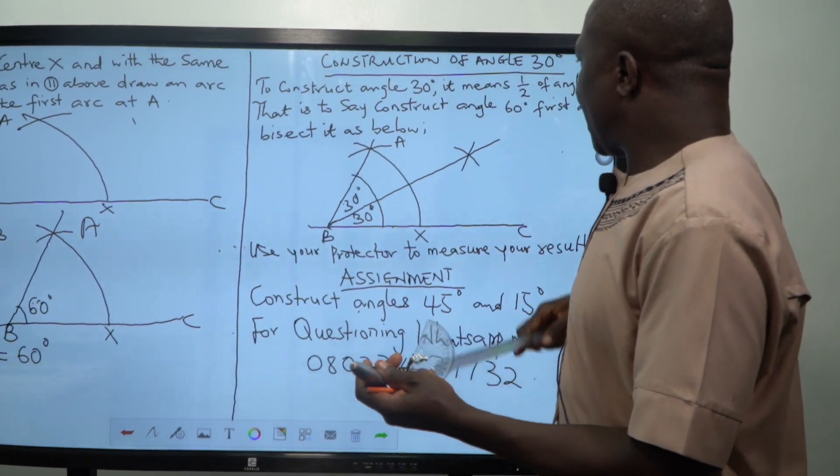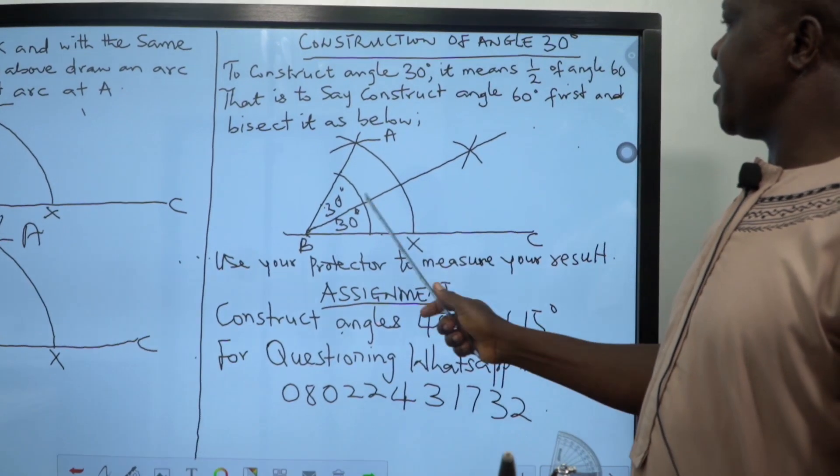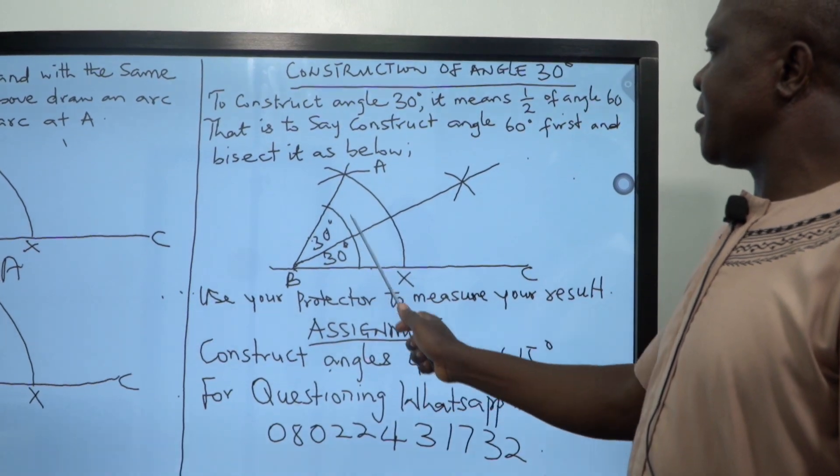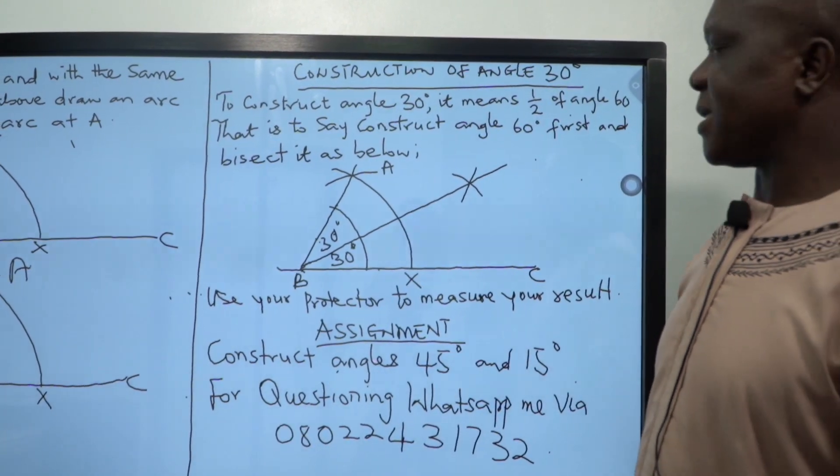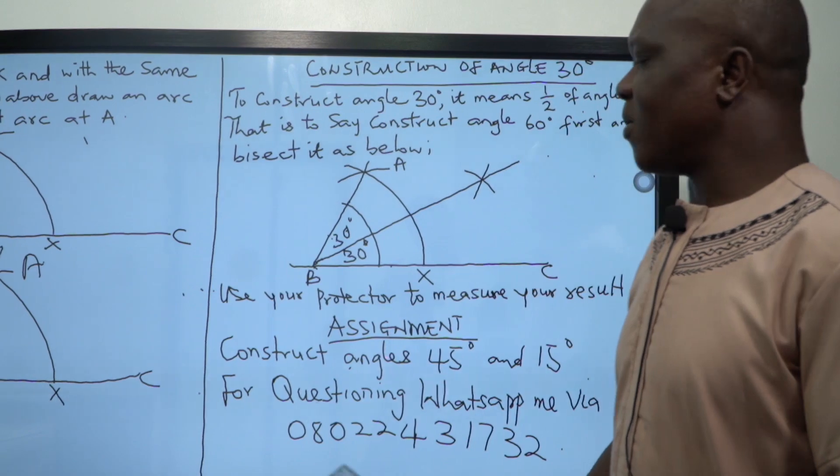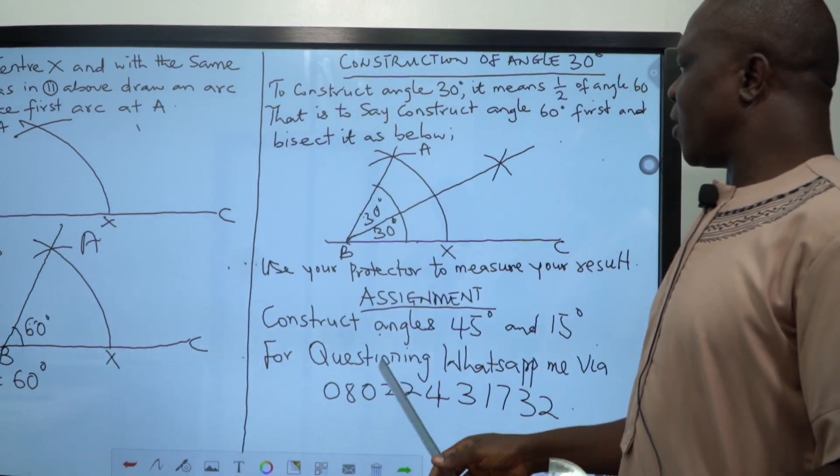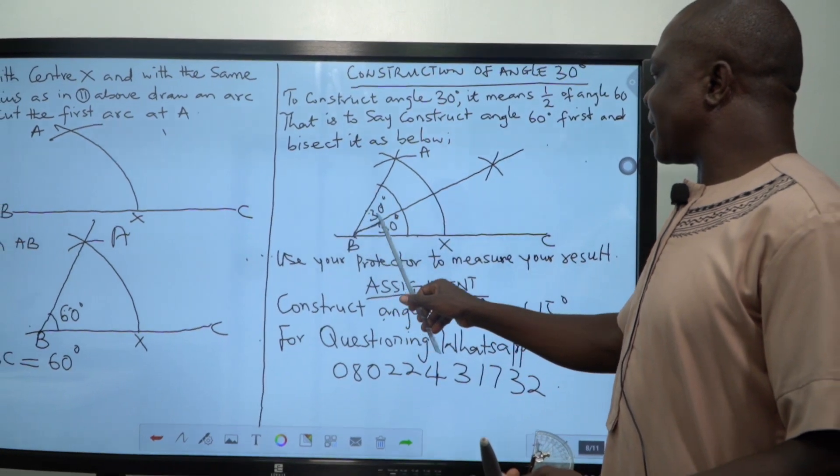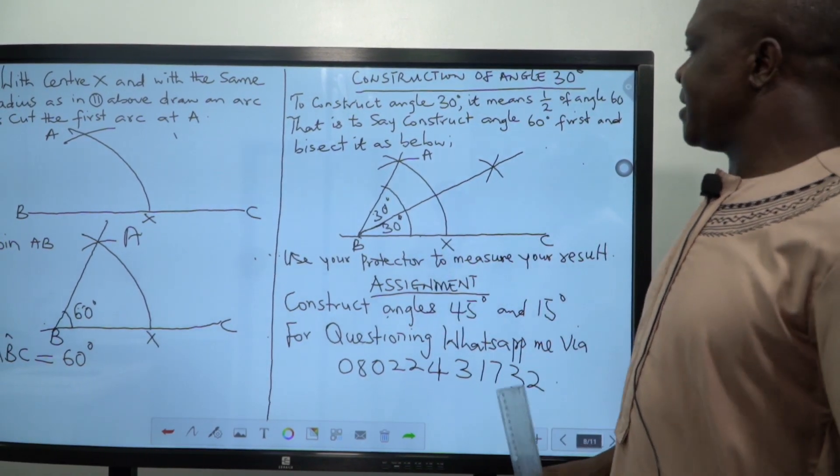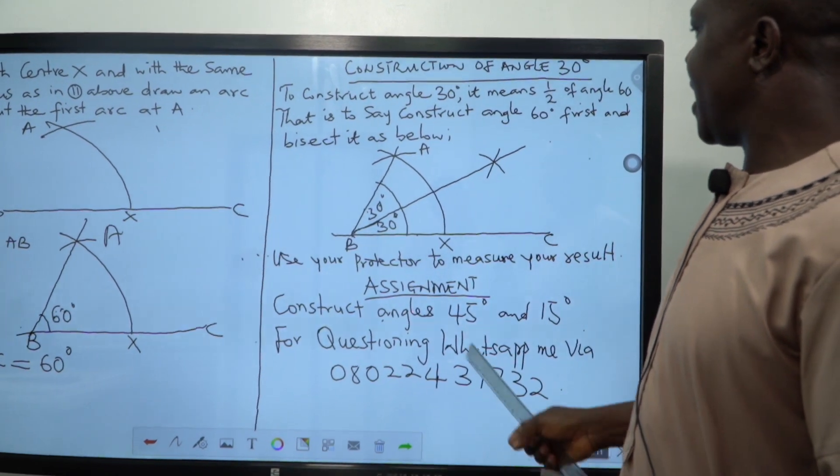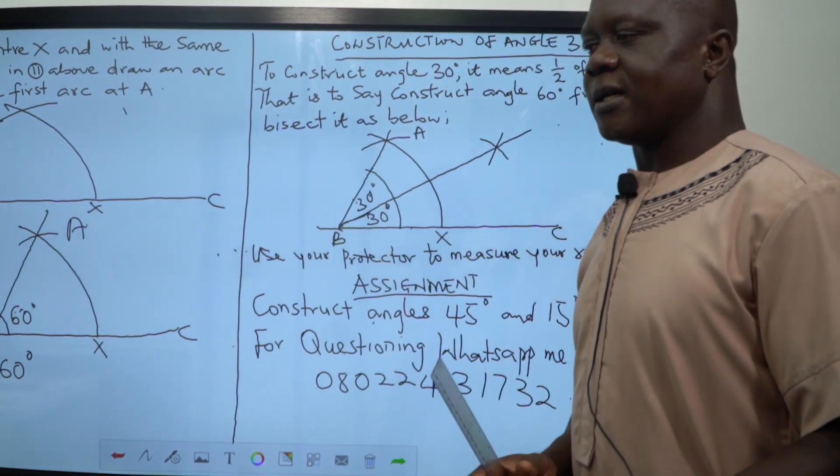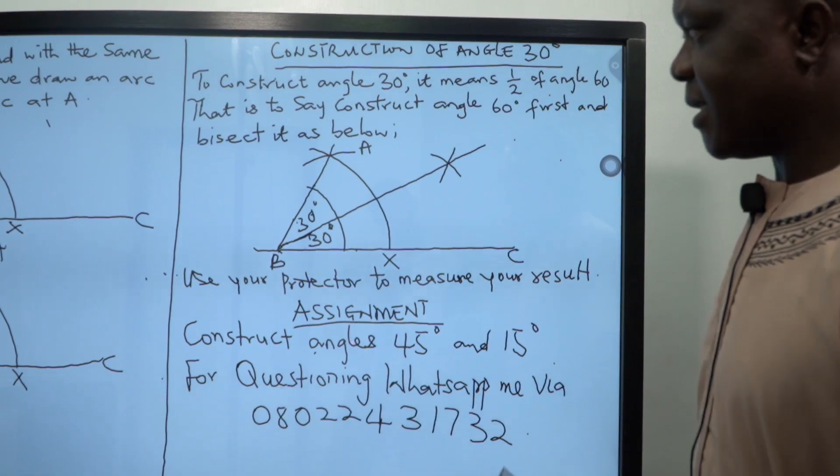You can now see that the two arcs now join or intersect or meet at that point of intersection. You use your meter rule and place it there and draw a line, which means you have divided this angle 60 into two equal parts, which is angle 30. If you use your protractor to measure, you will see that this line will be at the top of 30 degrees, showing you that the angle you have constructed is angle 30 degrees.